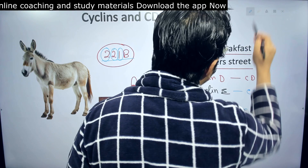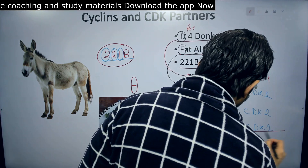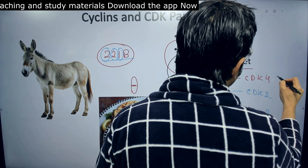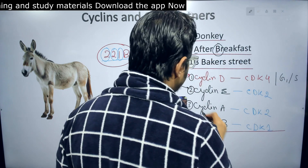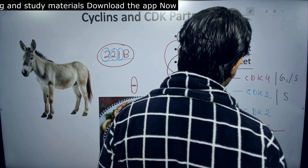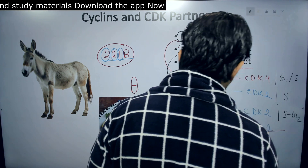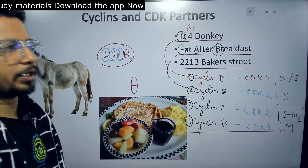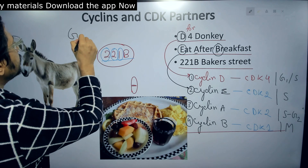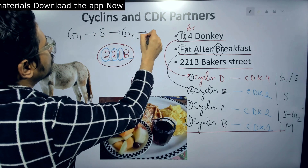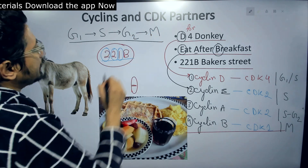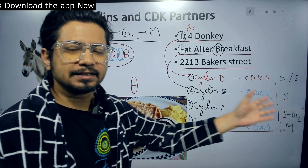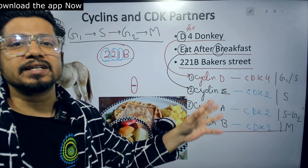And where are they placed in the cell cycle? CDK4 with cyclin D is a G1 and G1-S phase cyclin. Cyclin E is an S phase cyclin. Cyclin A is an S-G2 phase cyclin. And cyclin B is the M phase cyclin. The sequence follows cell cycle progression: G1 → S → G2 → M. You just map D, E, A, B to G1, S, G2, M and you get the cyclin-CDK partners from those three sentences.